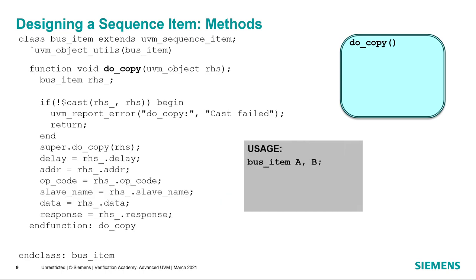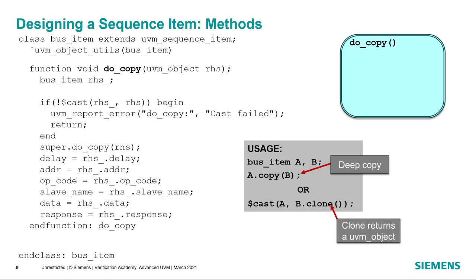When we go to use this, if we have two transactions A and B, we say A.copy(B), which takes the contents of B and copies them into A. This is what we call a deep copy, so if B is extended from other transactions, it will take all of the contents of B including base transactions and copy them into A. There's another method called clone that will create a new instance of type B and copy the contents of B into it. So if you already have an object to receive the contents, you can do A.copy(B). If you don't, you can call B.clone, which will return a new object of type B with a copy of the contents, and then assign the result of the clone to A.